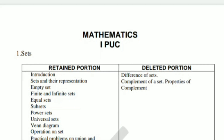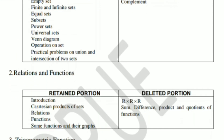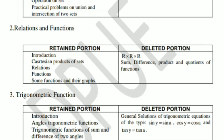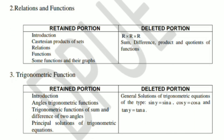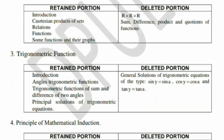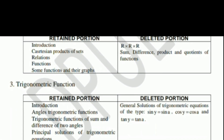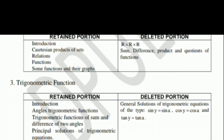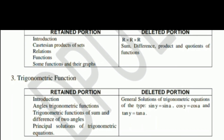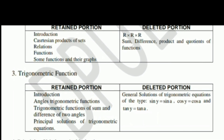In the first chapter, the difference of sets is deleted, and the complementary set is complete and deleted. In the relations and functions chapter, the triple product is deleted. Also, the difference of the product and quotients of the functions — these concepts are deleted in the relations and functions chapter.